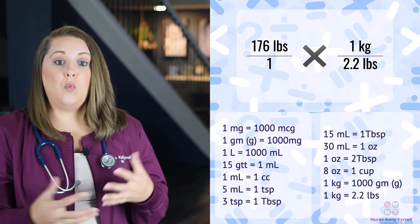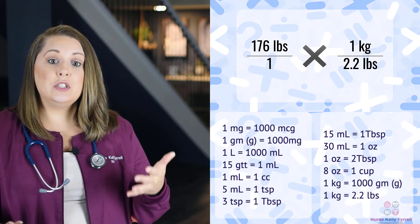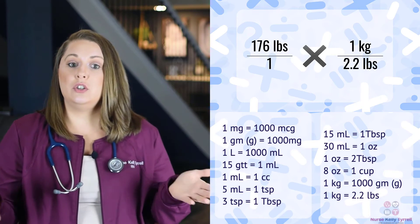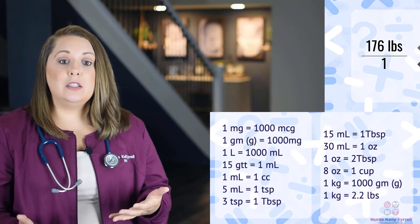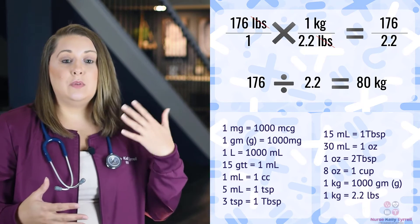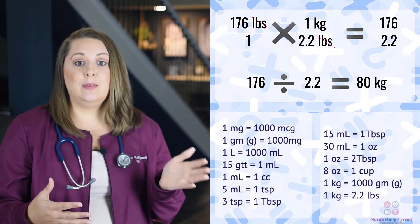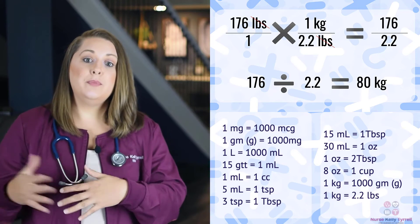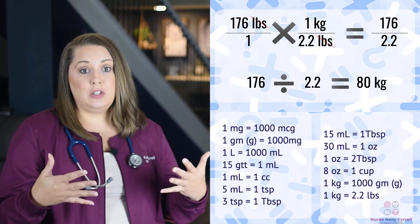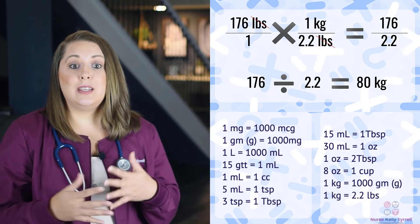Using dimensional analysis, we set up the weight conversion like this: 176 pounds over 1, times 1 kilogram over 2.2 pounds. Pounds cancel out, and we get 176 times 1 equals 176, and 1 times 2.2 equals 2.2. Dividing: 176 divided by 2.2 equals 80 kilograms.